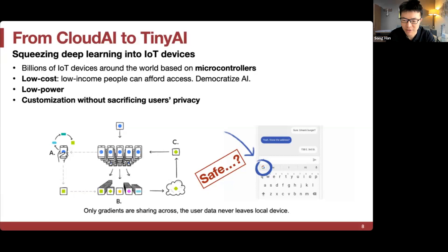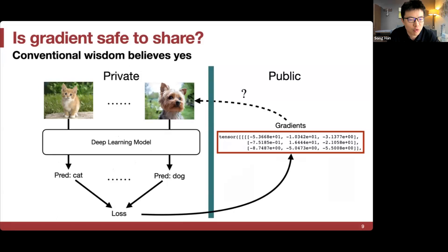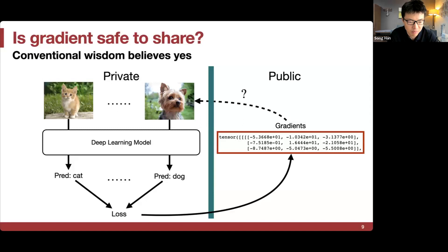A question we want to ask is: is gradient safe to share? Different workers compute on the same model with their own data. They do back-propagation locally without sending data to each other, but they can exchange weights or the weight diffs — essentially the gradients. But is the gradient safe to share? For example, two workers — one training on a cat image, one on a dog image — can they share gradients without leaking their data?